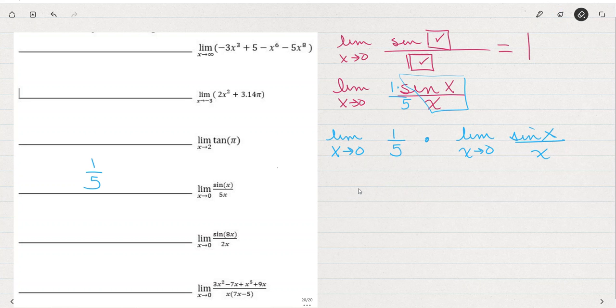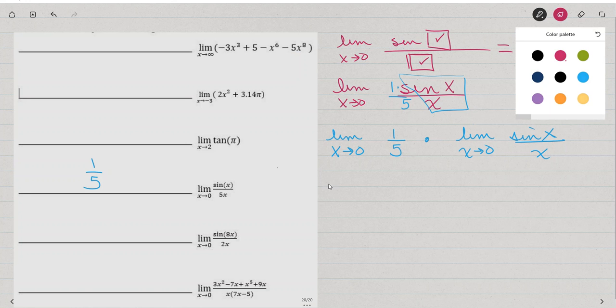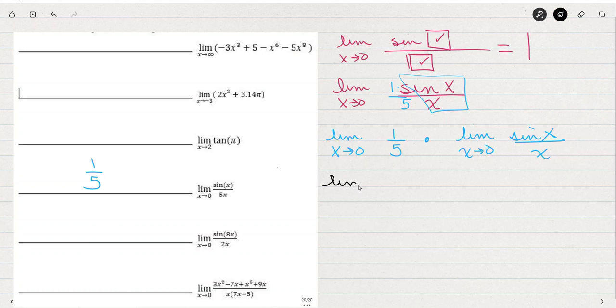I can apply a similar strategy to this next example, sine of 8x over 2x. Let me break this up again. So we have the limit as x approaches 0. Let me write this as 2 limits. See how I've just broken that 2x in the denominator? I've broken it into two pieces. So I've taken the sine 8x over 2x and broken it into a sine 8x over x times a half.